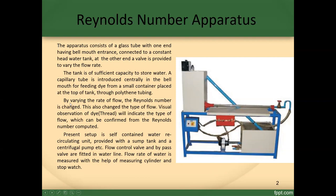By varying the rate of flow, the Reynolds number is changed, which also changes the type of flow. Based on observation of the dye thread, it will indicate the type of flow — whether turbulent or otherwise — which can be confirmed from the Reynolds number computed.